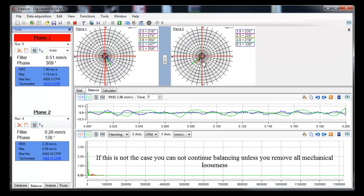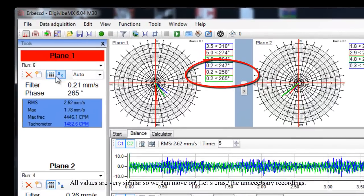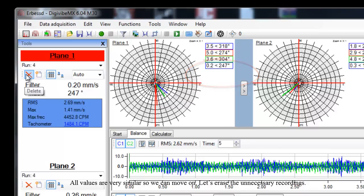If this is not the case, you cannot continue balancing unless you remove all mechanical looseness. All values are very similar so we can move on. Let us erase the unnecessary recordings.